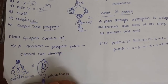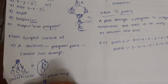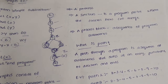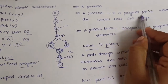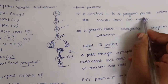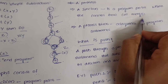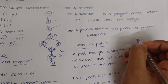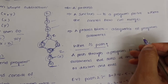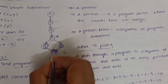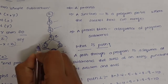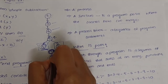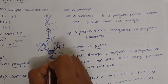A flow graph also consists of a junction, which is a program point where control flow can merge. Two or more control flow points or statements can be merged at a junction. Here we can see that two outputs are merged — this is called a junction.